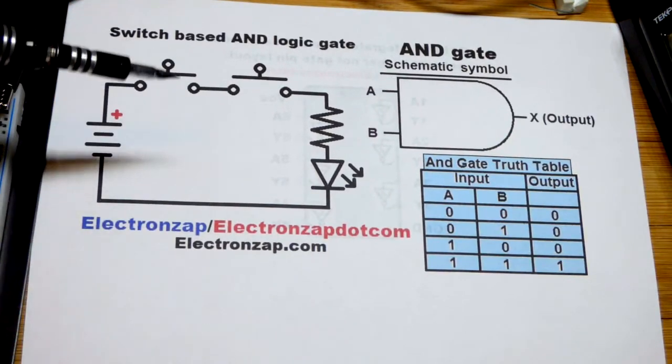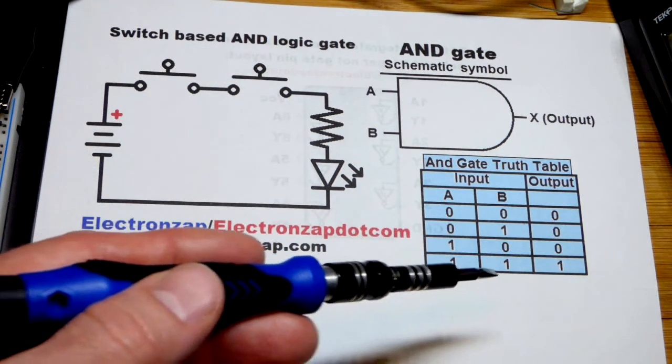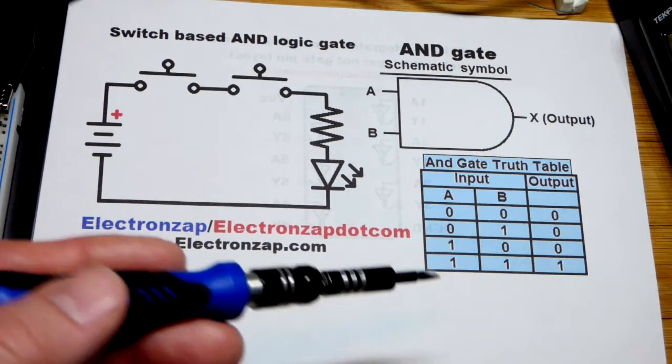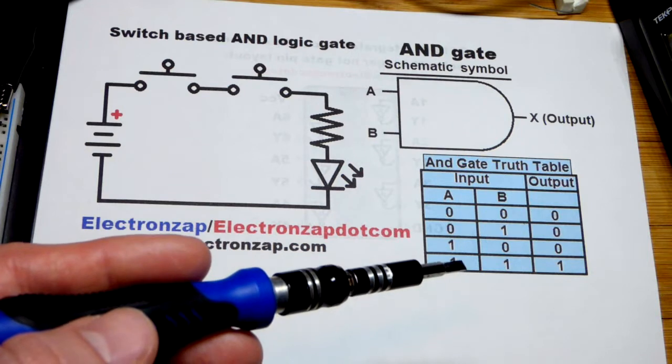We have to close both switches, turn them both on, and that's indicated by 1 when it comes to digital electronics because these are on or off. There's no middle ground. So this is digital electronics.